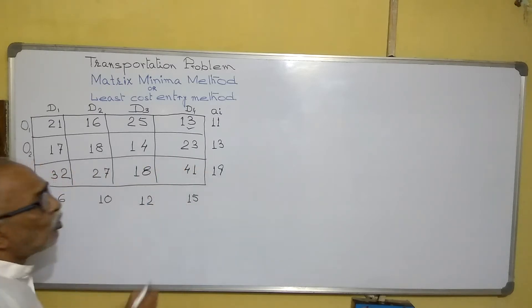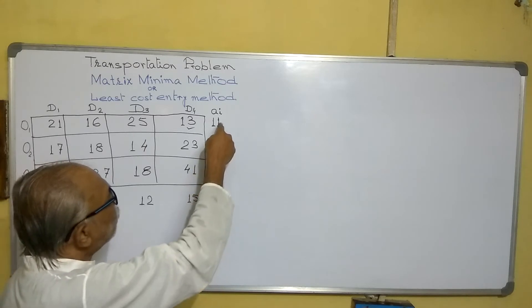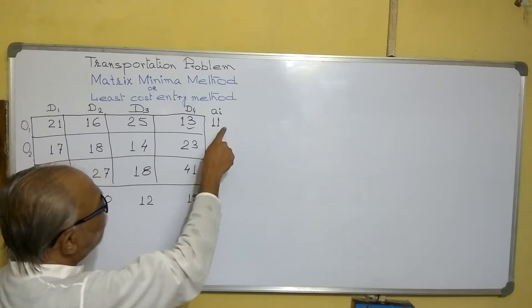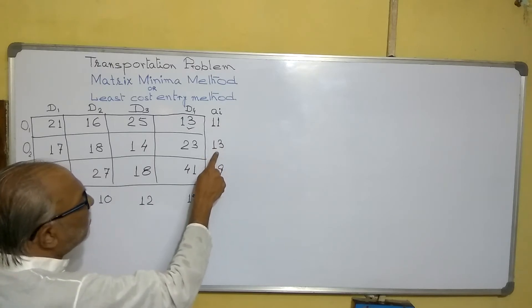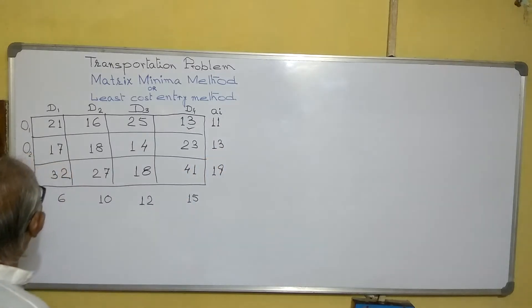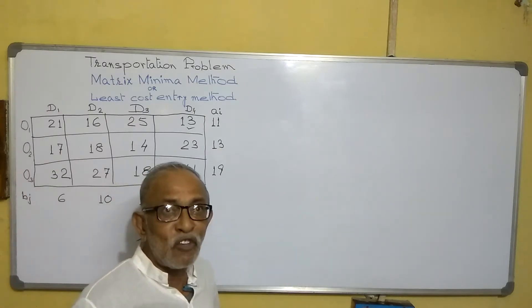One thing we will check before starting: total available, counting 19 and 11, 30 and 13, 43. Total requirement: 16, 17, plus 15, 28, 43. The total available and total requirement are equal. You have to check it.